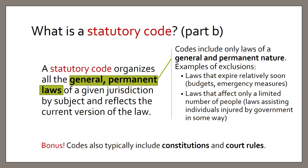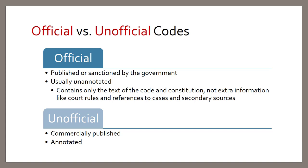Codes include only laws of a general and permanent nature, which means they do not include private laws or laws that are in effect for a limited time, such as budget laws, appropriations laws, or laws that expire very quickly like emergency measures. Private laws affect only a limited number of people and often have to do with immigration or address some kind of harm done to an individual by the government. As a bonus, codes also typically include constitutions and court rules.